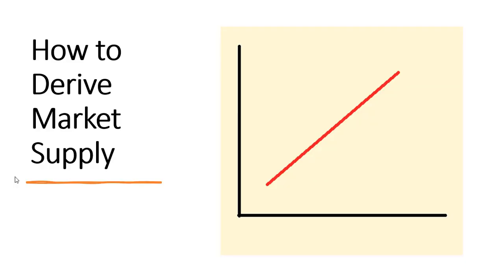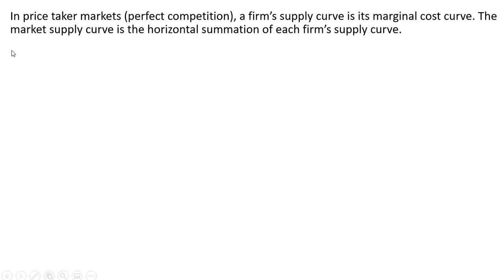Hello, in this video we're going to look at how to derive market supply. In price taker markets — perfect competition — a firm's supply curve is its marginal cost curve. The market supply curve is a horizontal summation of each firm's supply curve.